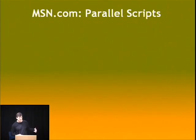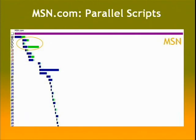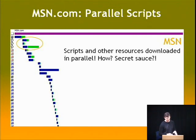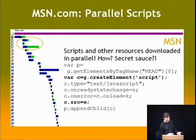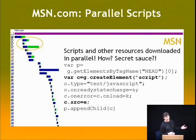MSN was different - their JavaScript files all download in parallel. If we look at their source code, they're using a technique I call the Script DOM Element approach: they call document.createElement with 'script', get a script tag created dynamically, then set the source. In all browsers, if you do this, the script will be loaded and executed, but during the download part it won't block anything else in the page.